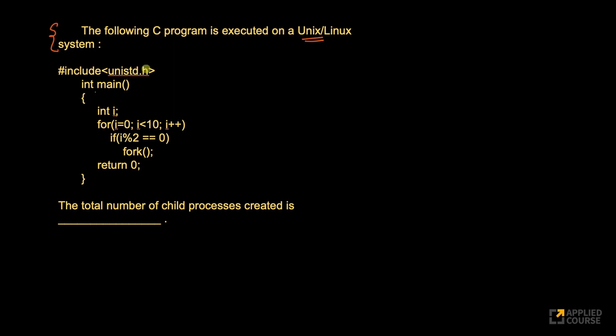It says hash include unistd.h, int main, int i. For i equals to 0, i less than 10, right? So this is what we have. So from 0 up to 9, this is what this loop runs into.